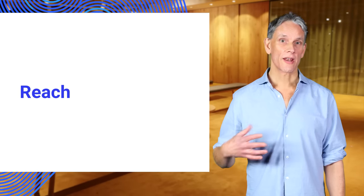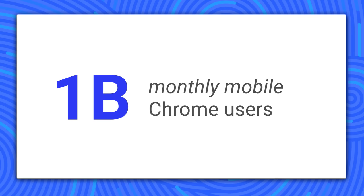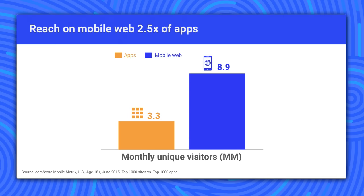Let's talk about reach and how we're seeing overall mobile web audience growth. We have data for Chrome: one billion monthly users on mobile, and this was just 400 million a year ago. Chrome is only four years old. On average, Chrome on Android users visit 100 sites per month. Let's drill down to site-level data. This CommScore data compares reach of the top 1,000 sites and apps, and mobile web reach is two and a half times that of apps.